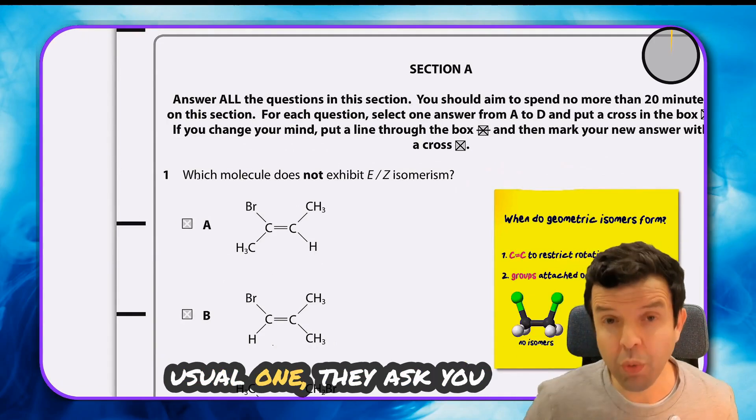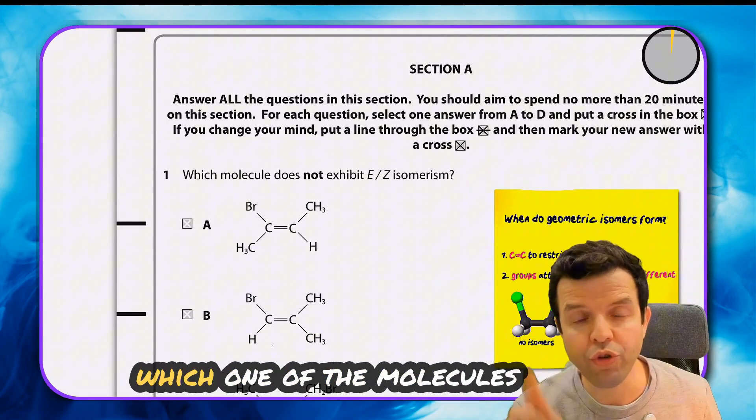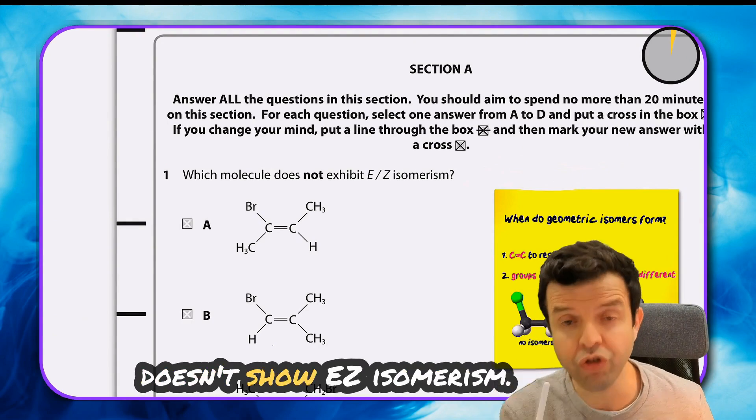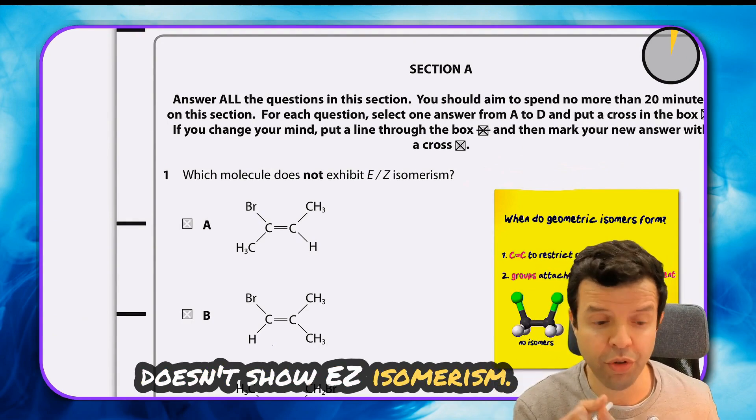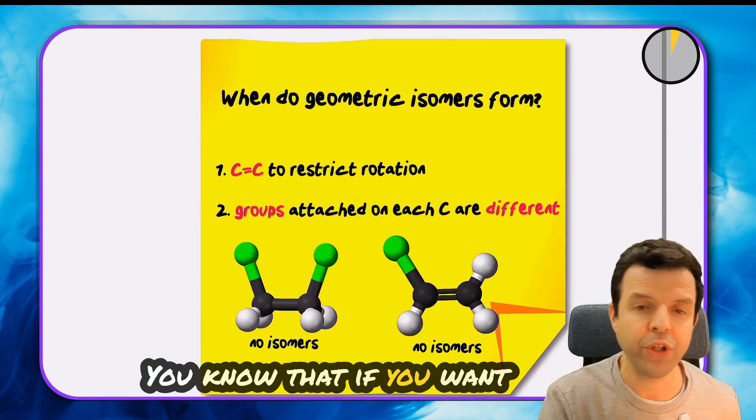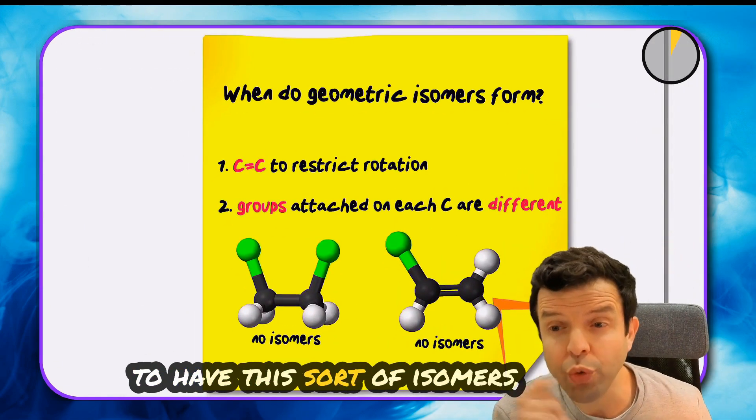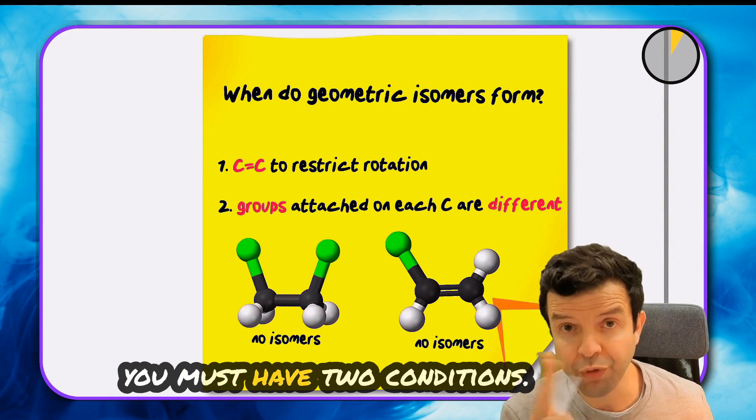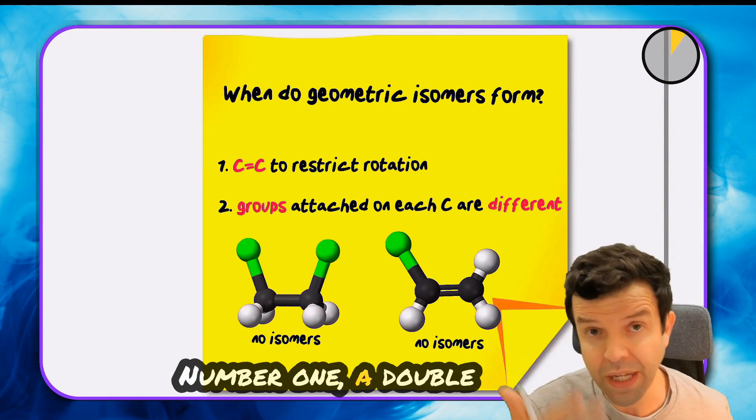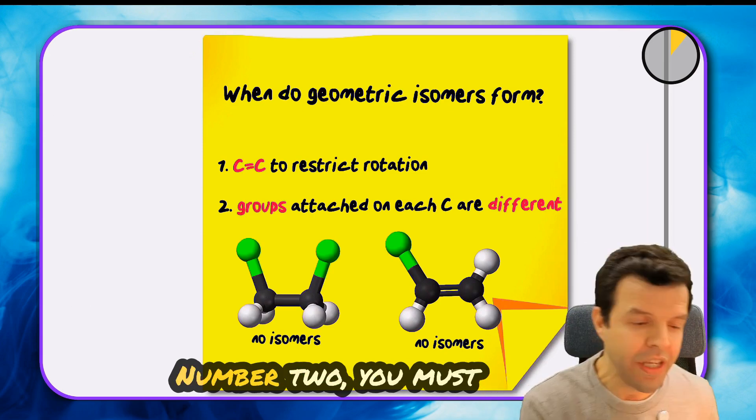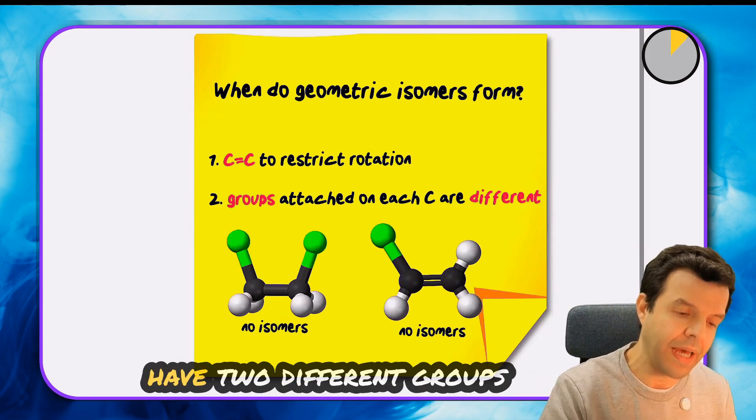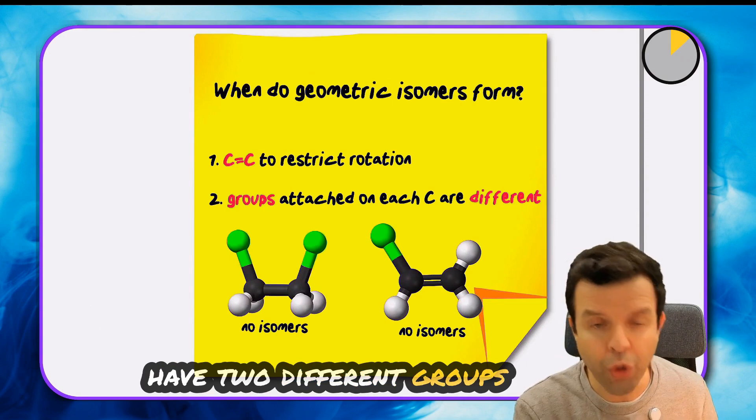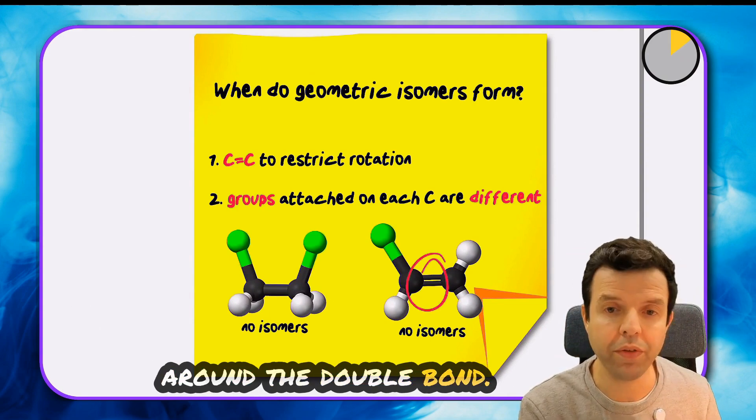The first question asks which molecule doesn't show E/Z isomerism. To have this sort of isomers you must have two conditions: number one, a C=C double bond to restrict rotation; number two, two different groups around the double bond. So if you look at the ones I have...